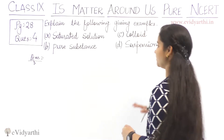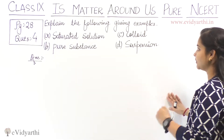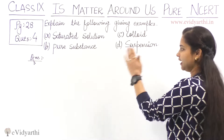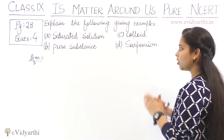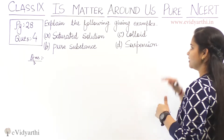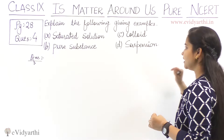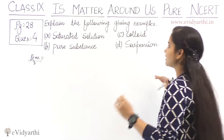Question: Explain the following given examples. A. Saturated solution. B. Pure substance. C. Colloid. D. Suspension.